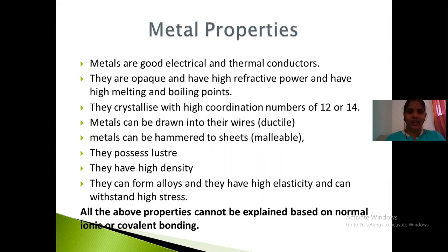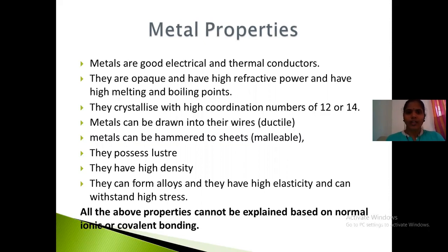They are ductile, malleable, and exhibit lustre. They have high density, it is easy to form an alloy, and they have high elasticity. They can withstand stress. All these properties cannot be explained if we consider the metal as an ionic bond or simply as a covalent bond.